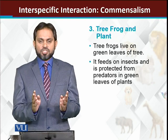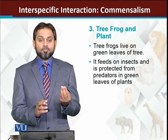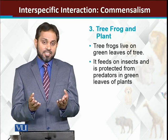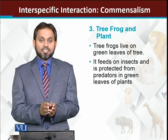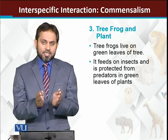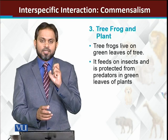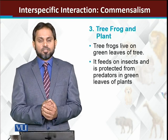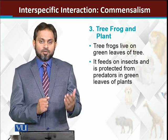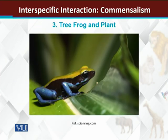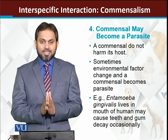The tree frog gets benefit from plants in the form of protection. This small frog is protected in the leaves of the plant. This is the second example of commensalism — the tree frog is getting benefit, while the plant is unaffected. You can see in this diagram that the tree frog hides in a leaf because of its small size.